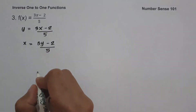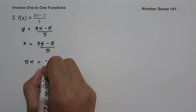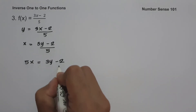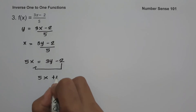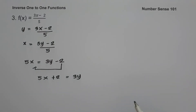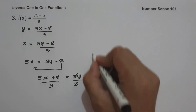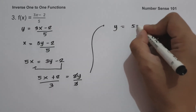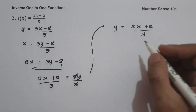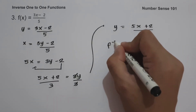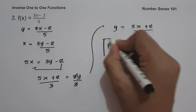Solve for y in terms of x. Multiply both sides by 5: 5x = 3y - 2. Move -2 to the side of 5x: 5x + 2 = 3y. Divide both sides by 3. So y = (5x + 2)/3. Therefore, the inverse of f(x) = (3x - 2)/5 is f⁻¹(x) = (5x + 2)/3, and this will be our answer.